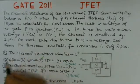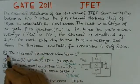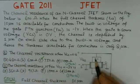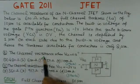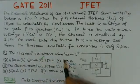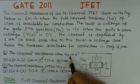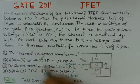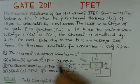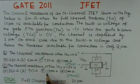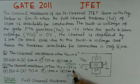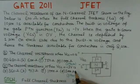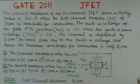There are two questions related to this problem. Number one, we have to find the channel resistance when VGS is 0 — there are four options. Similarly, we have to find the channel resistance when VGS is minus 3 volts, and there are four options given for that as well.